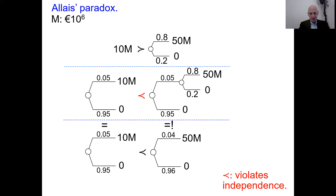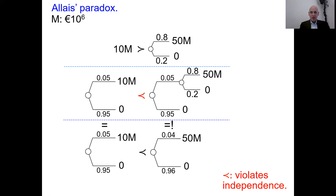I state a mathematical claim: these two preferences — in the middle and upper situations — give a violation of the independence preference condition. The independence condition says if you have a preference between two lotteries, mixing in the same lottery with both at the same probability should not change that preference. Going from upper to middle is exactly that: we mix in a probability distribution assigning probability 1 to zero with both lotteries at probability 0.95. So the independence condition is violated.